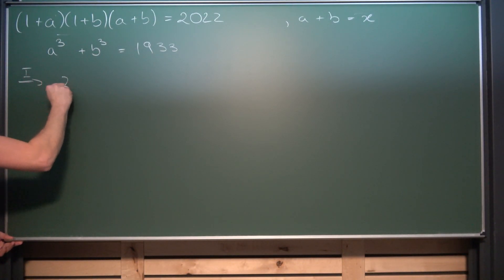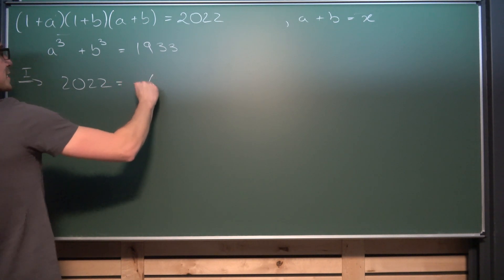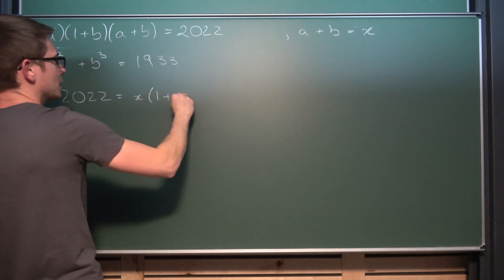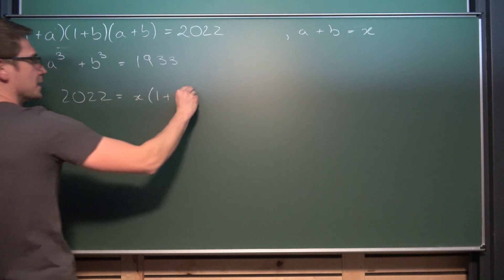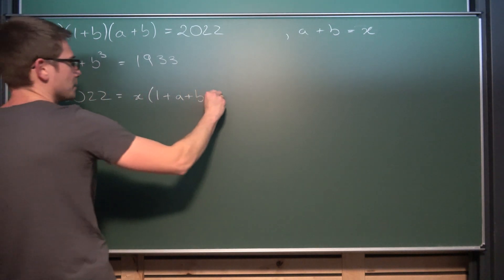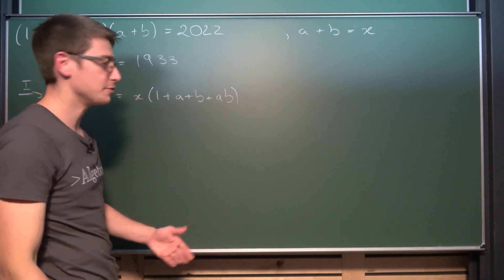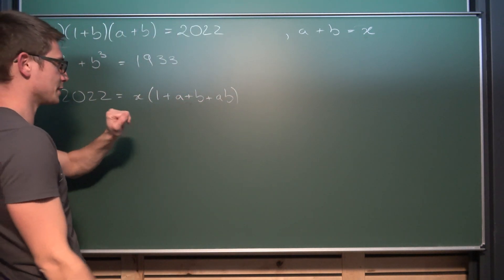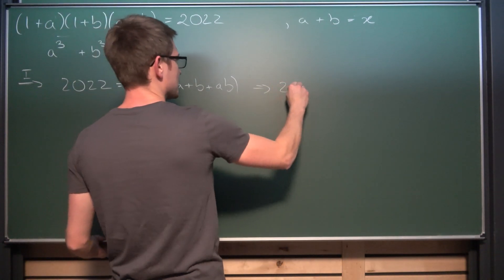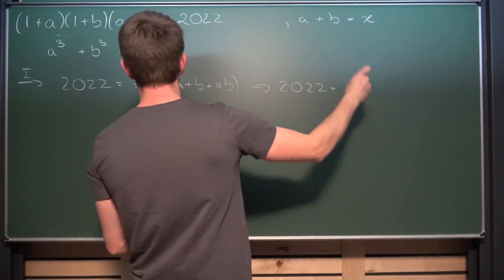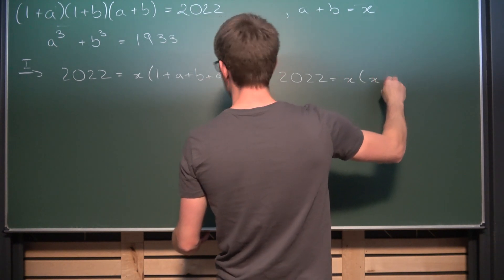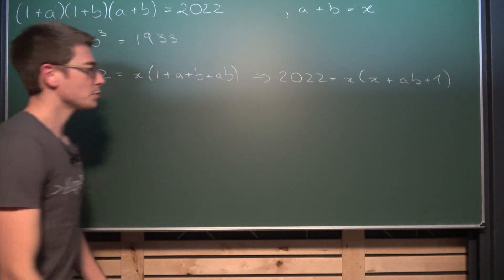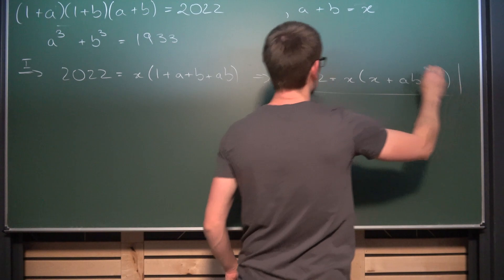Meaning for the first equation 2022 is equal to x times, if we were to multiply this out we are going to get 1 plus a plus b plus a times b. And maybe you notice something in here namely that a plus b which is our x appears in this parenthesis too. Meaning what we are going to get is that 2022 is hence equal to x times x plus ab plus 1. This right here is our first equation and we are going to pin this down for now.